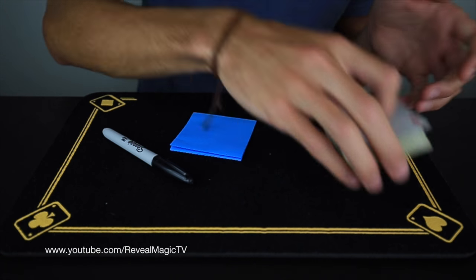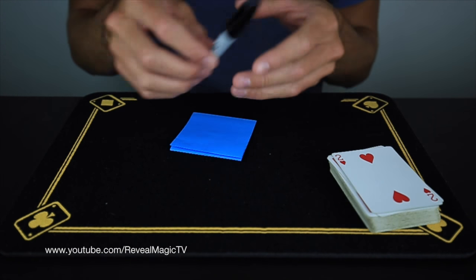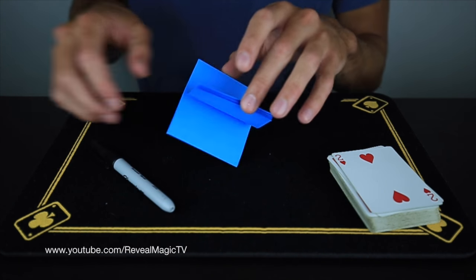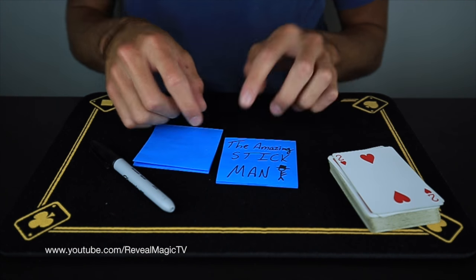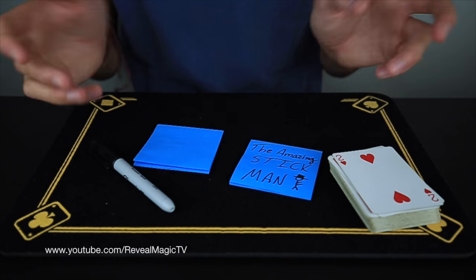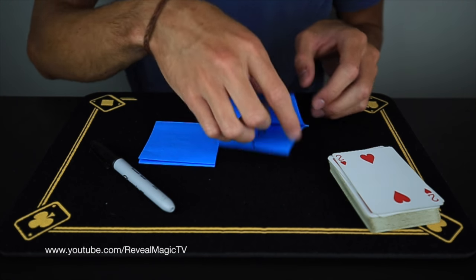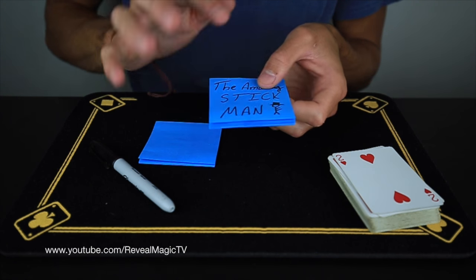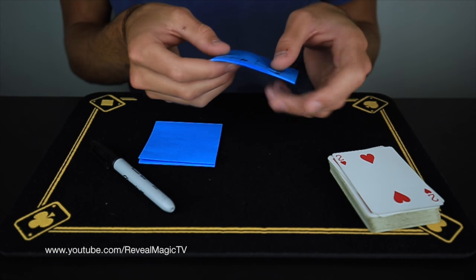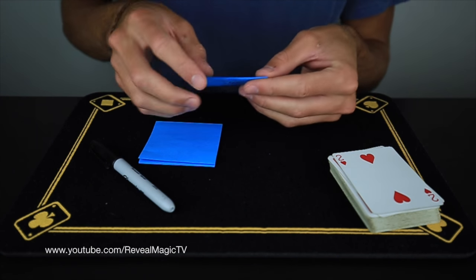You also need a force card, and I am using the two of hearts today. So what you need to do is take your sharpie and your notepad and convert it. You can write a title on there or just draw whatever you want, very simple. And then you have to draw a stick figure cartoon.